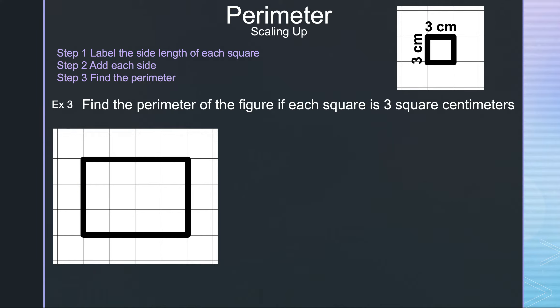Now let's take a look at example 3. Let's read the question and see if there's anything different. Find the perimeter of the figure if each square is 3 square centimeters.